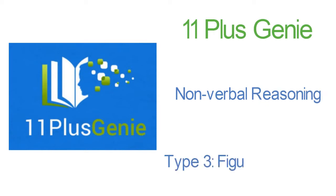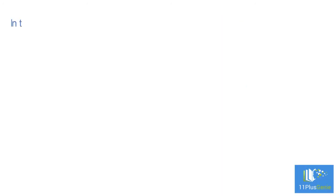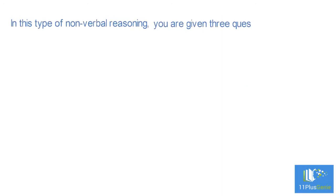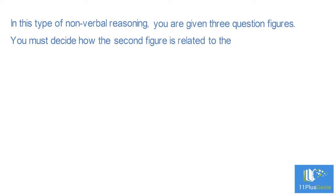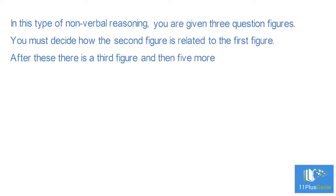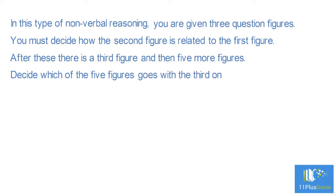Type 3 figure analogies. In this type of nonverbal reasoning, you are given three question figures. You must decide how the second figure is related to the first figure. After these there is a third figure, and then five more figures. Decide which of the five figures goes with the third one to make a pair like the first two.